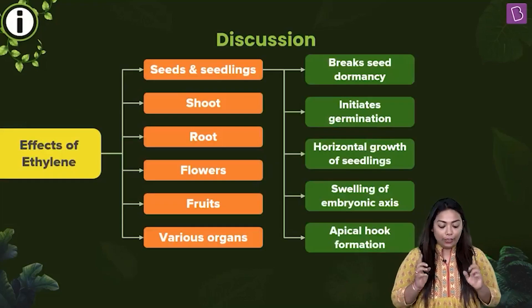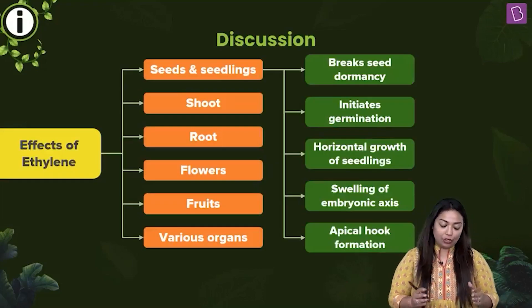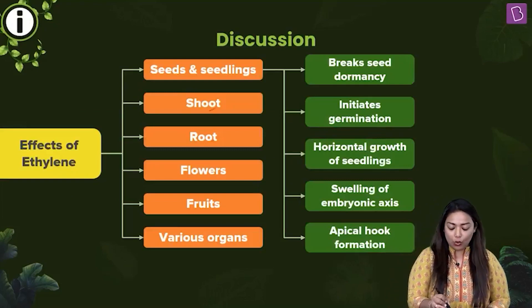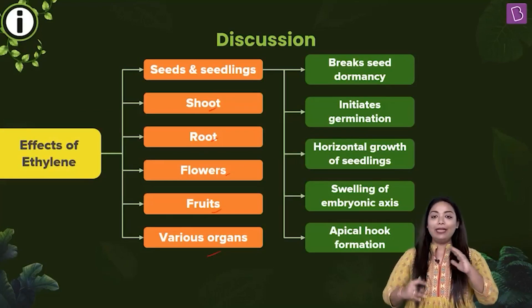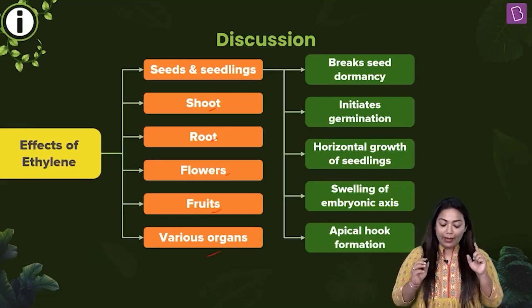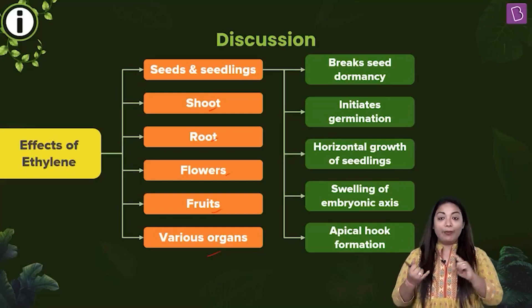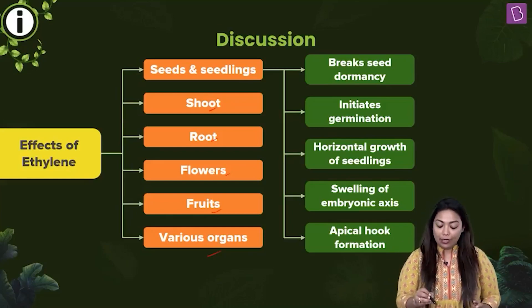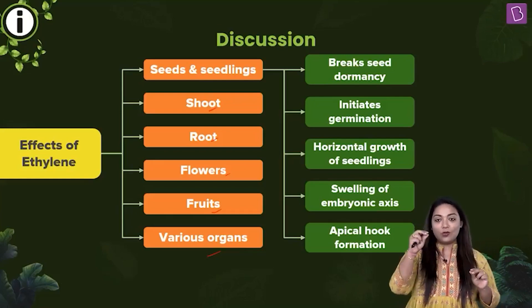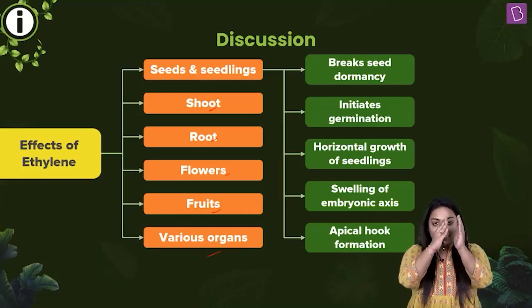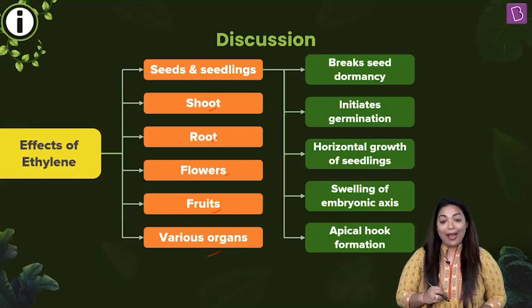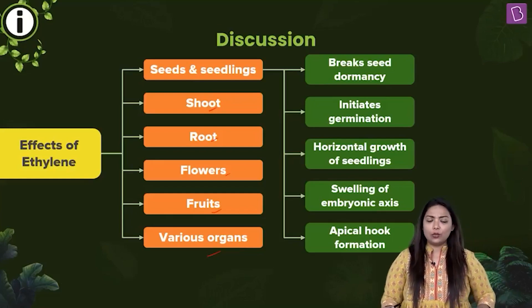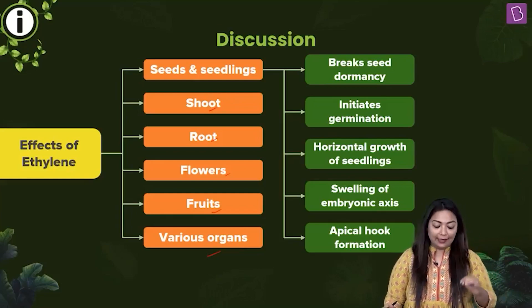When you talk about the effects of Ethylene, look at the effects it has on seed, shoot, root, flower, fruits and other organs. In the case of seeds, what is it doing? It breaks dormancy, initiates germination, promotes horizontal growth of the seedlings, swelling of the embryonic axis — that's where the root and shoot demarcation eventually forms — and apical hook formation. All these functions are brought about by Ethylene in seeds.